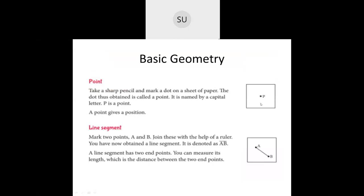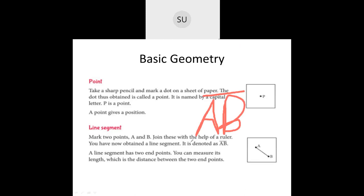Then we have something called line segments. If you mark two points on a paper, name them A and B, and join these points using a ruler and pencil, what you get is called a line segment. A line segment has two end points and you can measure its length — the length is the distance between the two points. You denote a line segment by writing capital A, B and drawing a line on top, read as line segment AB.